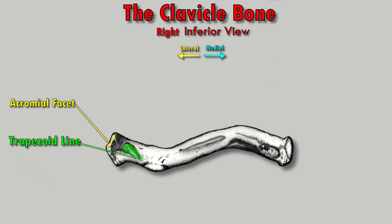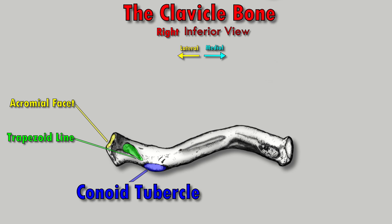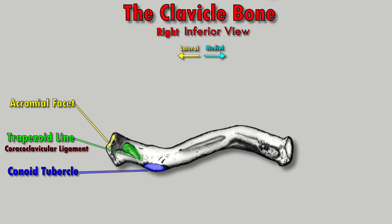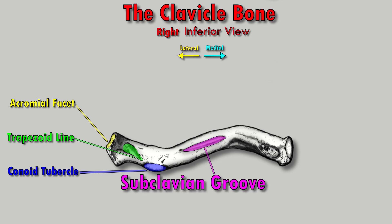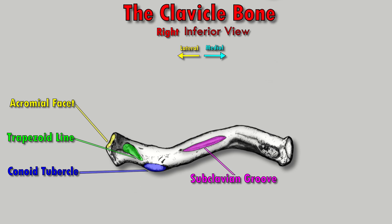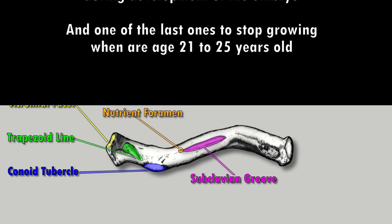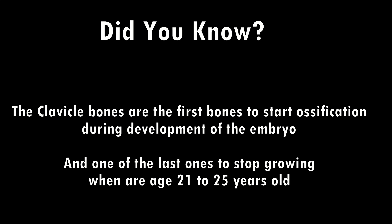Then we have the conoid tubercle, which provides an attachment site for the conoid ligament. Those two ligaments — the trapezoid and conoid — are part of the coracoclavicular ligament. Next up is the subclavian groove — an actual groove in the bone where the subclavius muscle inserts. To the lateral side of the subclavian groove you will see a nutrient foramen, whose job is to provide nutrients to make a strong healthy bone through the nutrient artery.